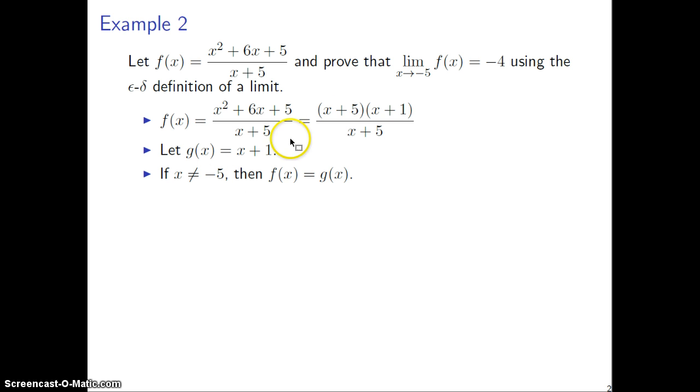And as long as x is not equal to negative 5, the number that would cause this denominator to become 0 over here, then f of x and g of x would give you the same values. And whenever that's true, then the limits of these two functions at x is negative 5 would be the same.